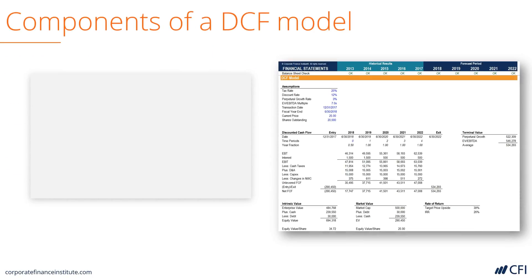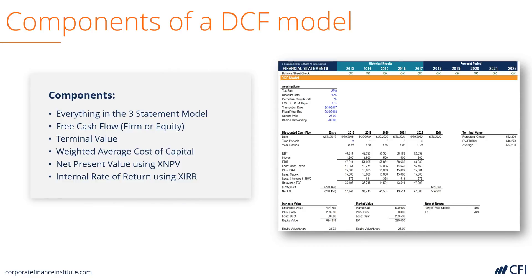The next most common type of model to be layered on top is a Discounted Cash Flow Analysis model. It includes everything in the three-statement model, but also has a section on free cash flow and valuation. Free cash flow is calculated using a series of formulas, and it can be free cash flow to the firm or free cash flow to equity. An analyst will calculate a terminal value and use the weighted average cost of capital to discount all cash flows back to the present value. An analyst will also calculate the internal rate of return of making the investment.